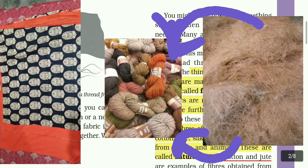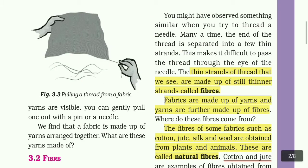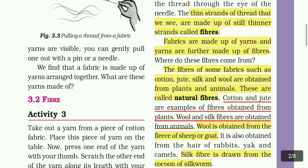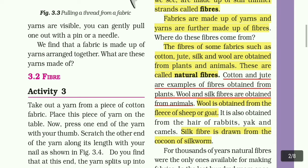The fibers of some fabrics such as cotton, jute, silk, and wool are obtained from plants and animals. These are called natural fibers. Cotton and jute are examples of fibers obtained from plants. Wool and silk fibers are obtained from animals.